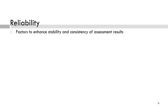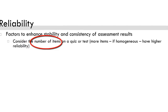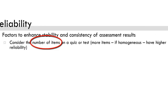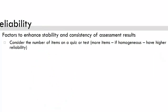So what does this mean for instructors? We can pay attention to factors that can make a score less reliable or consistent, and your job is to figure out why these items could contribute to enhancing reliability — be prepared to discuss this in the tutorial. First, consider the number of items on a test. More items, if homogeneous, have higher reliability. Why would this enhance the reliability? We'll talk about it during the tutorial.